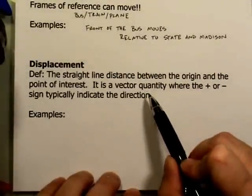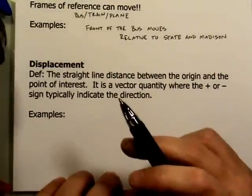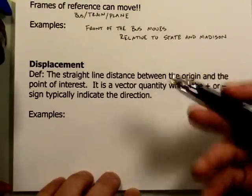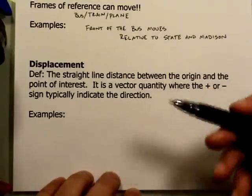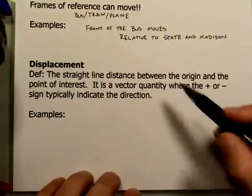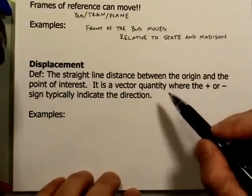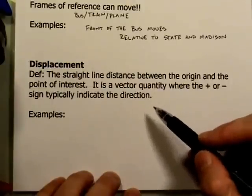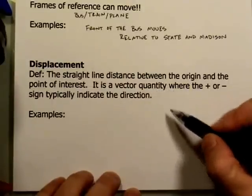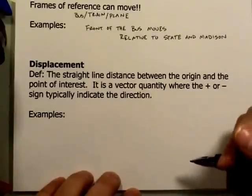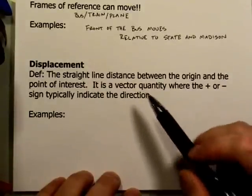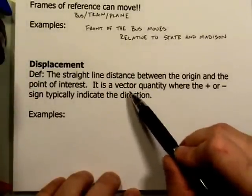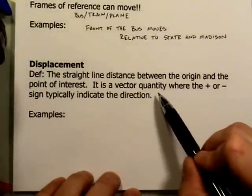Displacement is a vector quantity, meaning it has both magnitude and direction. The magnitude is typically measured in meters, kilometers, or centimeters — the same units used for length. The direction can be left, right, up, down, north, south, east, or west, or represented by an angle on a coordinate plane. One way or another, displacement contains both magnitude and direction because it is a vector quantity.